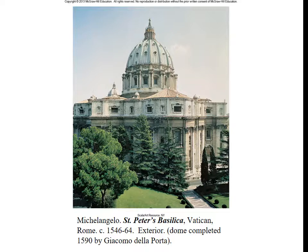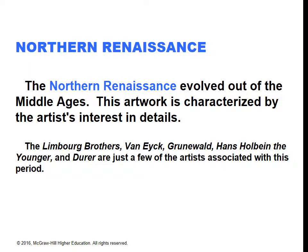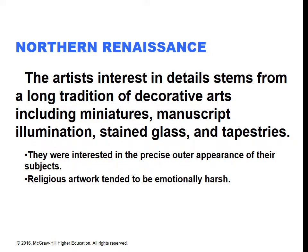The Northern Renaissance is less influenced by Greek and Roman culture, and more evolved out of the Middle Ages, with the influence from the Italian Renaissance coming later. In the north, people had fewer examples of Roman architecture. Artists associated with this period include the Limbourg brothers, van Eyck, Grünewald, Hans Holbein the Younger, and Dürer. Northern artists were interested in details — there was a long tradition of decorative arts, miniatures, manuscript illumination, stained glass, and tapestries. They were interested in the precise outer appearance of their subjects, and religious artwork tended to be emotionally disturbing, like Christ on the cross.